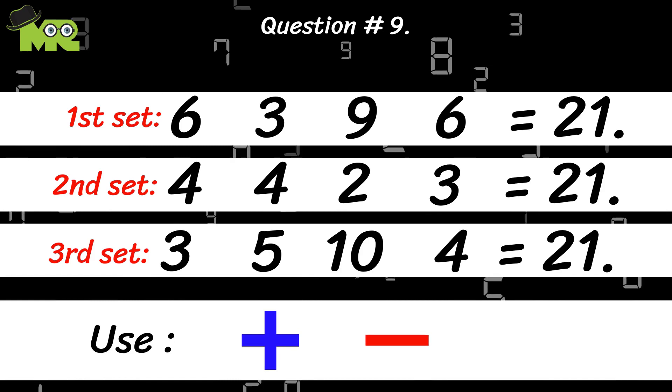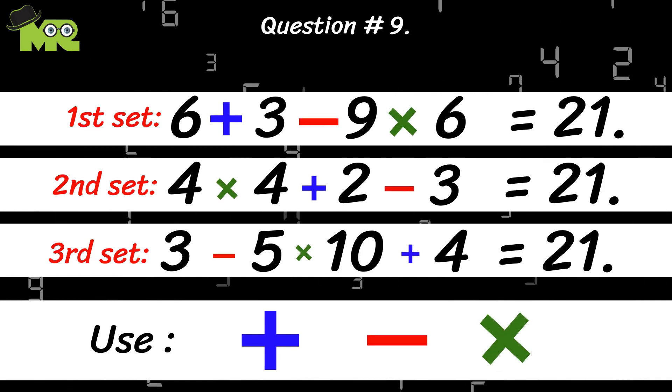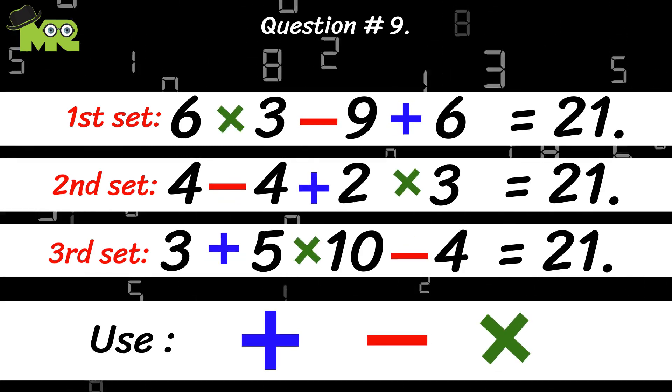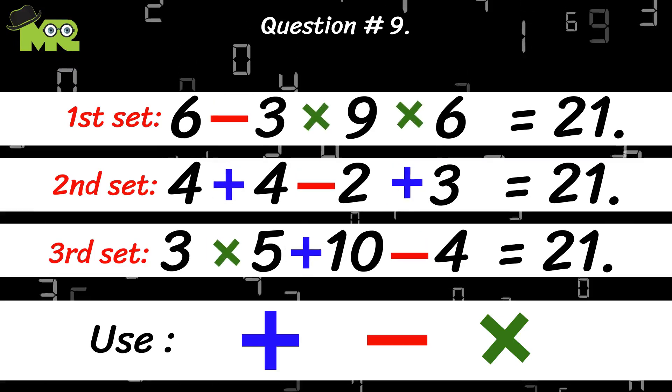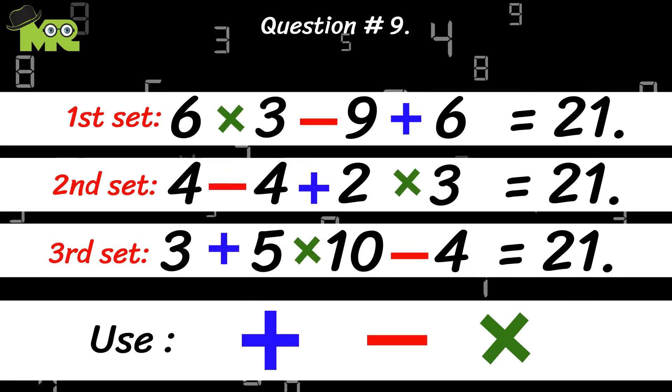You need to use the addition, subtraction, or multiplication signs and place them in between the following numbers in a way that each set of numbers can equal 21.